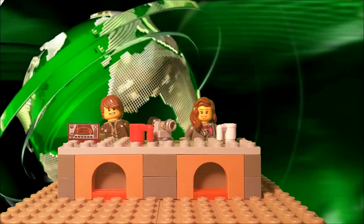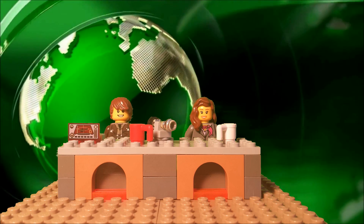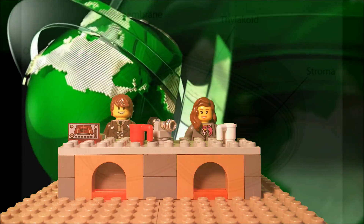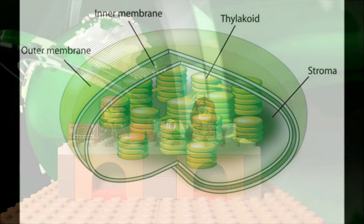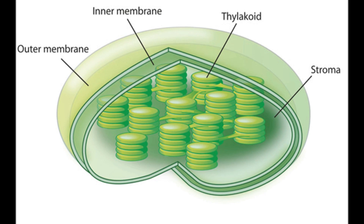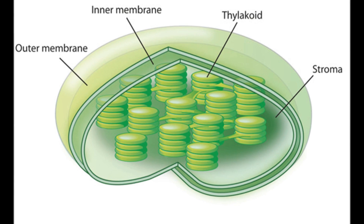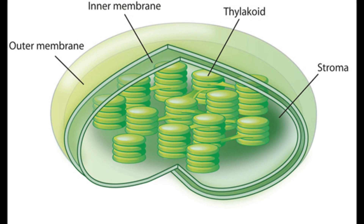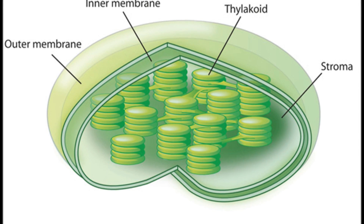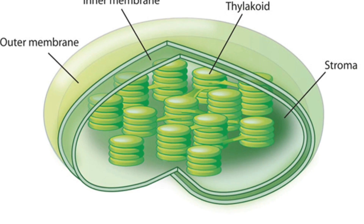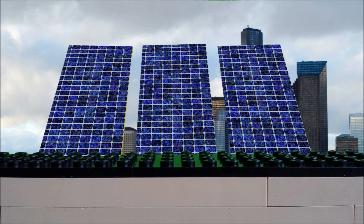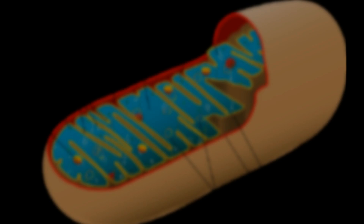Now you may be wondering how a plant cell gets its energy to make all these proteins. There are actually two ways, the first being the chloroplasts. Chloroplasts make energy from the sun by a process called photosynthesis. The main pigment involved in these reactions, chlorophyll, is what gives plants their green color. Chloroplasts are represented by the solar panels on top of the factory because they both make power from the sun.